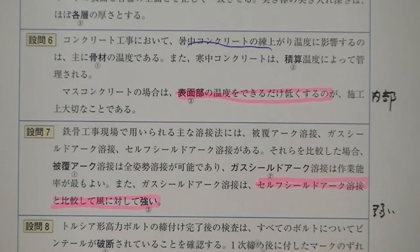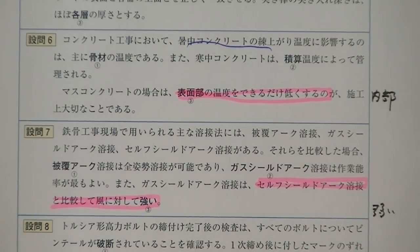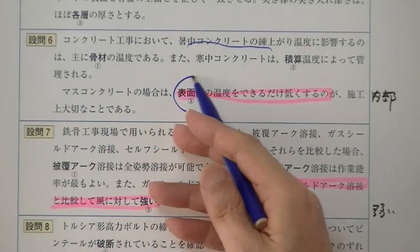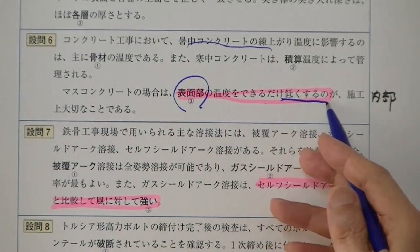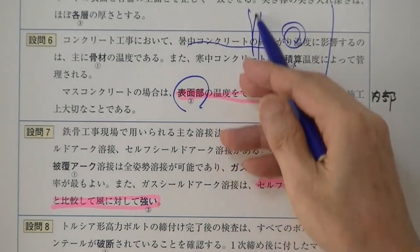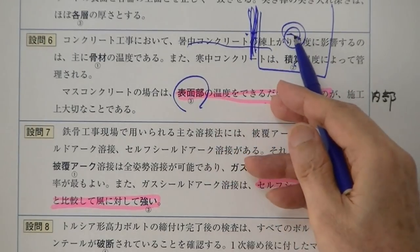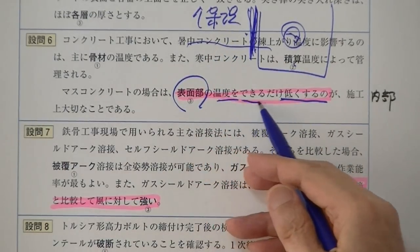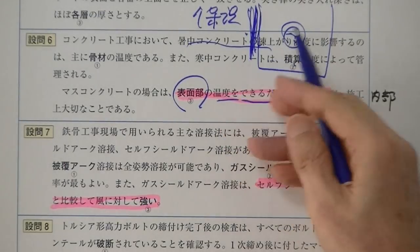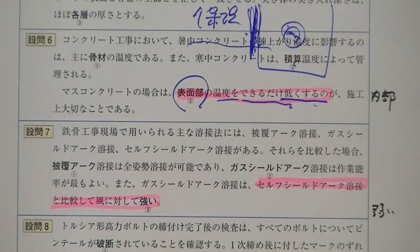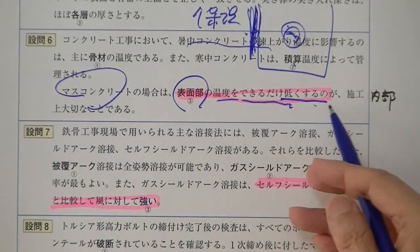初中コンクリートのポイントは打ち込み温度が35度以下にすること。寒中コンクリートは91日分の積算温度で管理する。マスコンクリートの場合は内部の温度と表面の温度の温度差があるので表面に保温養生しなければいけない。表層部の温度をできるだけ高くすることで内部との温度差を低くする。これが重要なポイントです。